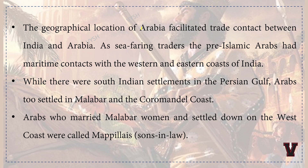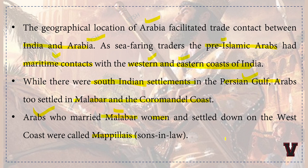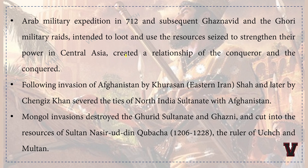Advent of Arabs — the context of how they arrived: The geographical location of Arabia facilitated trade contact between India and Arabia. As seafaring traders, the pre-Islamic Arabs had maritime contacts with the western and eastern coasts of India. While there were south Indian settlements in the Persian Gulf, Arabs too settled on the Malabar and Coromandel coasts. Arabs who married Malabar women and settled on the west coast were called Mappilais — meaning son-in-laws.